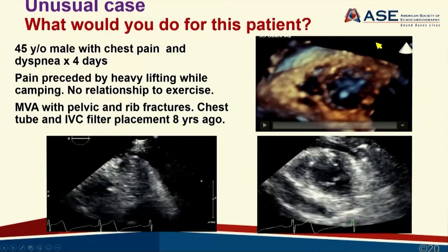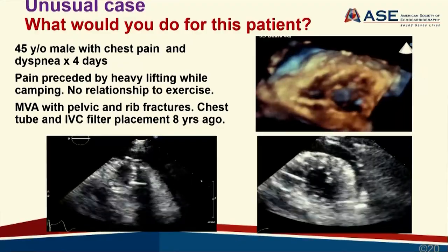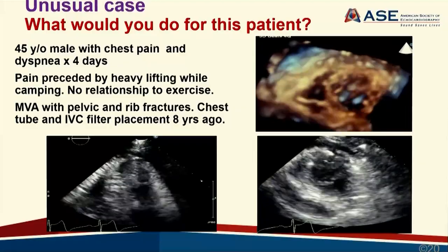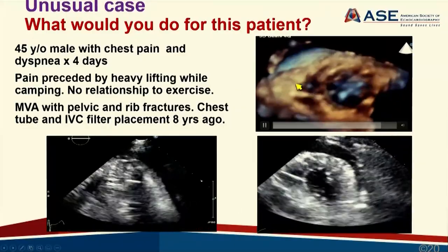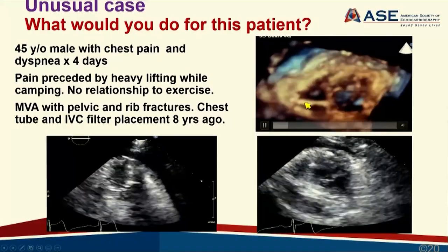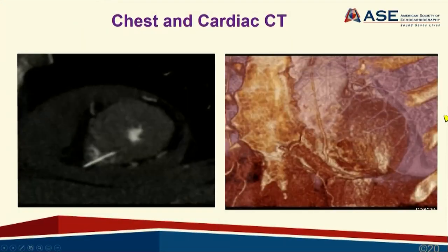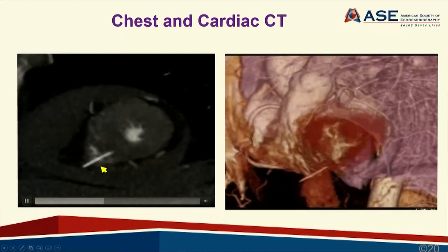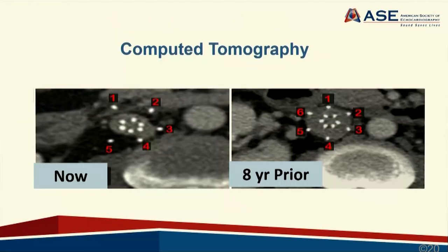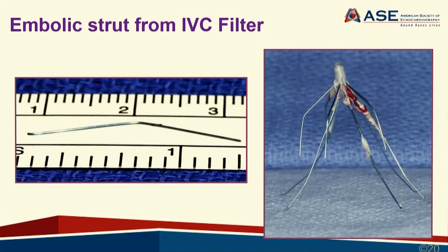A final case illustrating the value of multimodality imaging: a 45-year-old with chest pain and a history of IVC filter placement presented with pericardial effusion and a peculiar linear structure seen on 2D and 3D echocardiography. Cardiac CT showed this linear structure piercing through the RV and septal wall—identified as a strut that had migrated from the IVC filter, causing the pericardial effusion, tamponade, and chest pain. Multimodality imaging was essential in making this diagnosis.